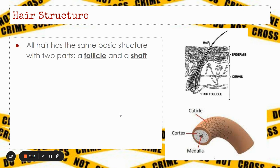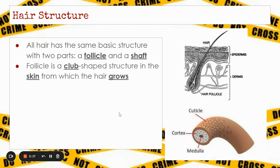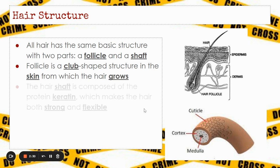All hair, regardless of what organism it comes from, has the same basic structure with two parts: a follicle and a shaft. The follicle is the club-shaped structure in the skin from which the hair grows — that lower bulb-shaped portion that the hair is going to grow out of.